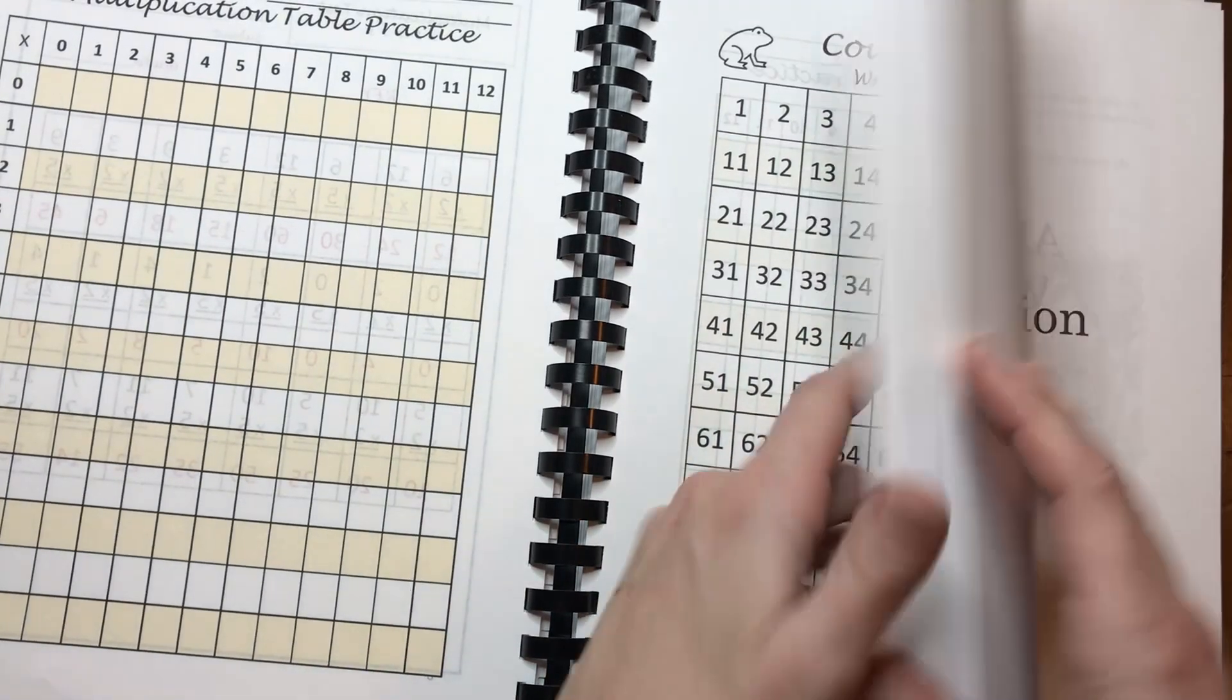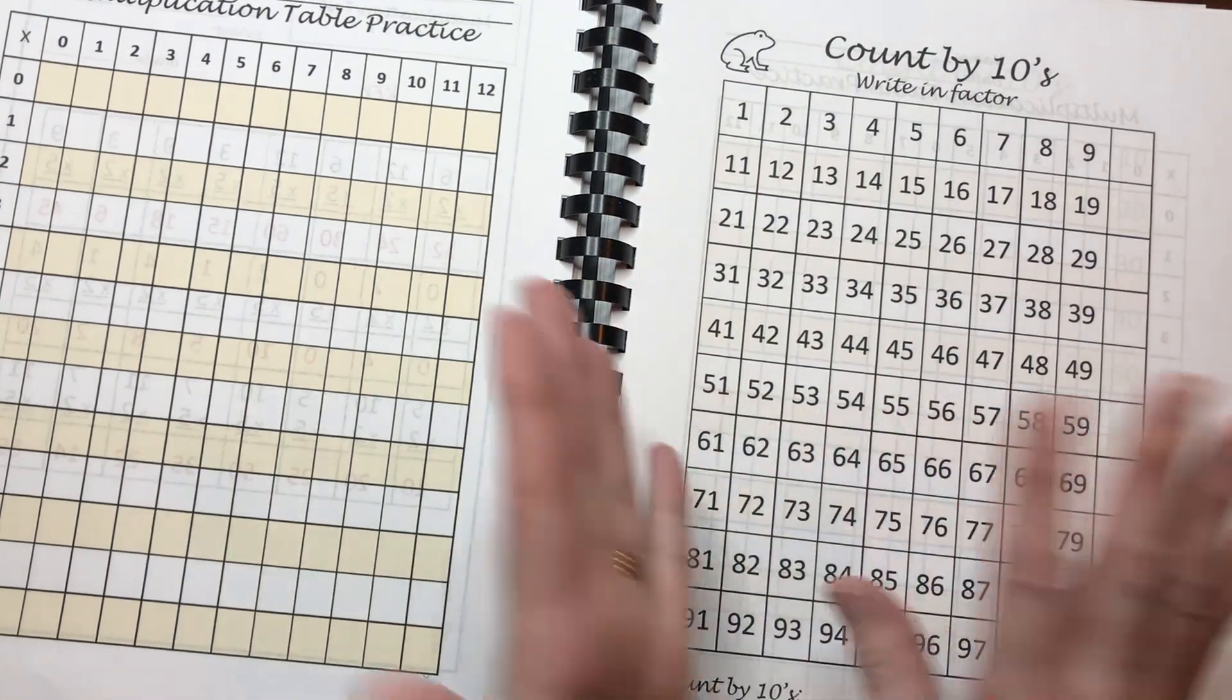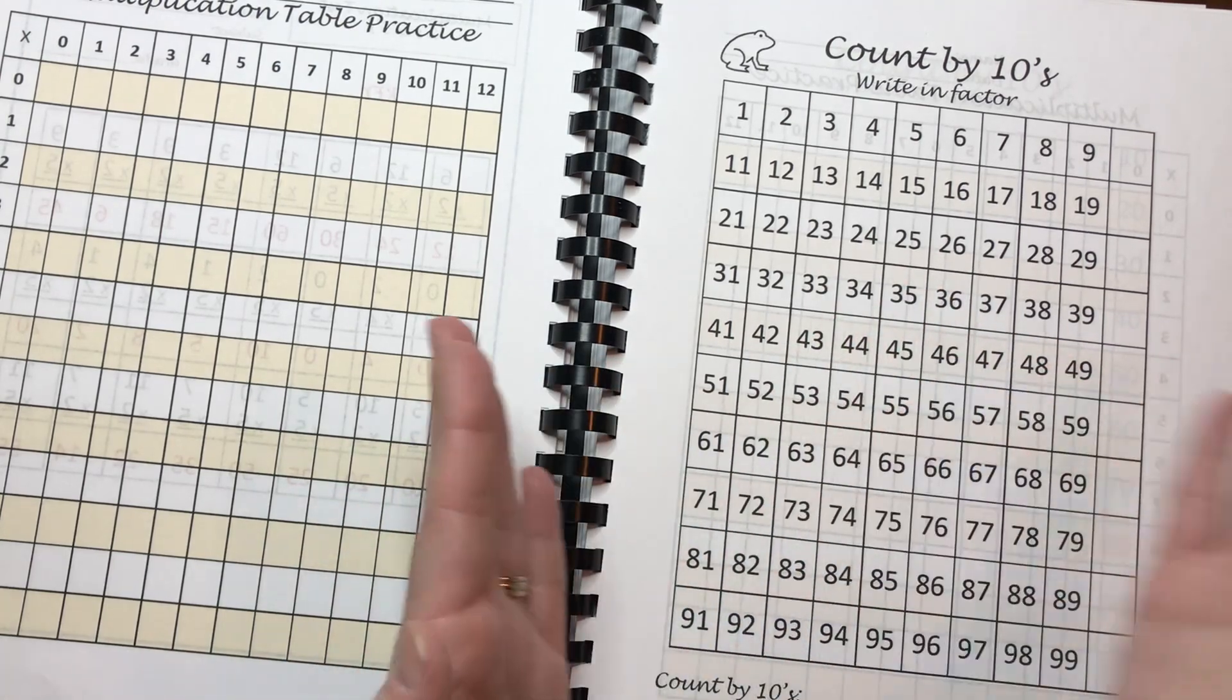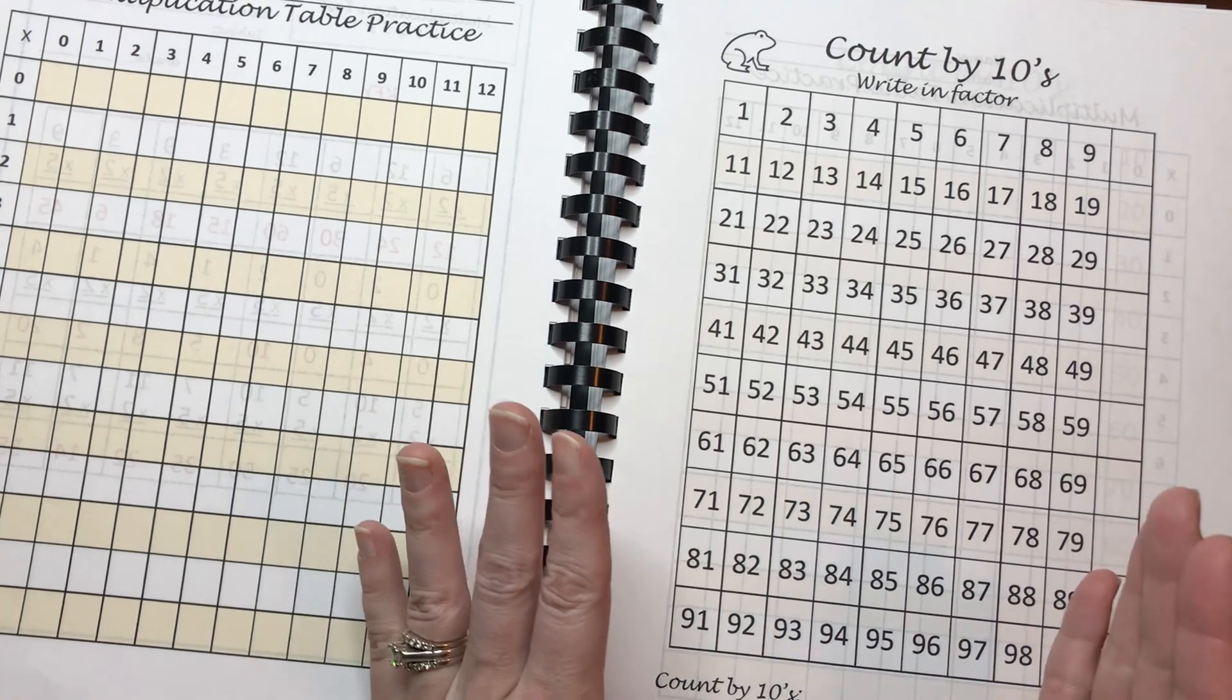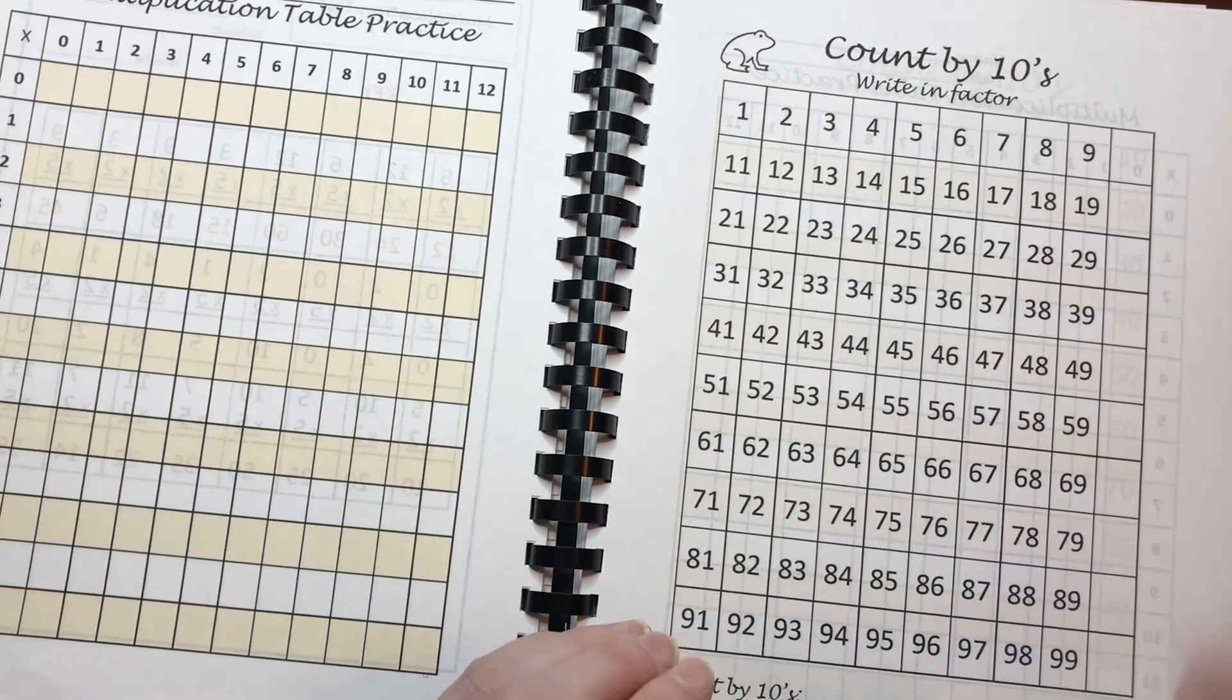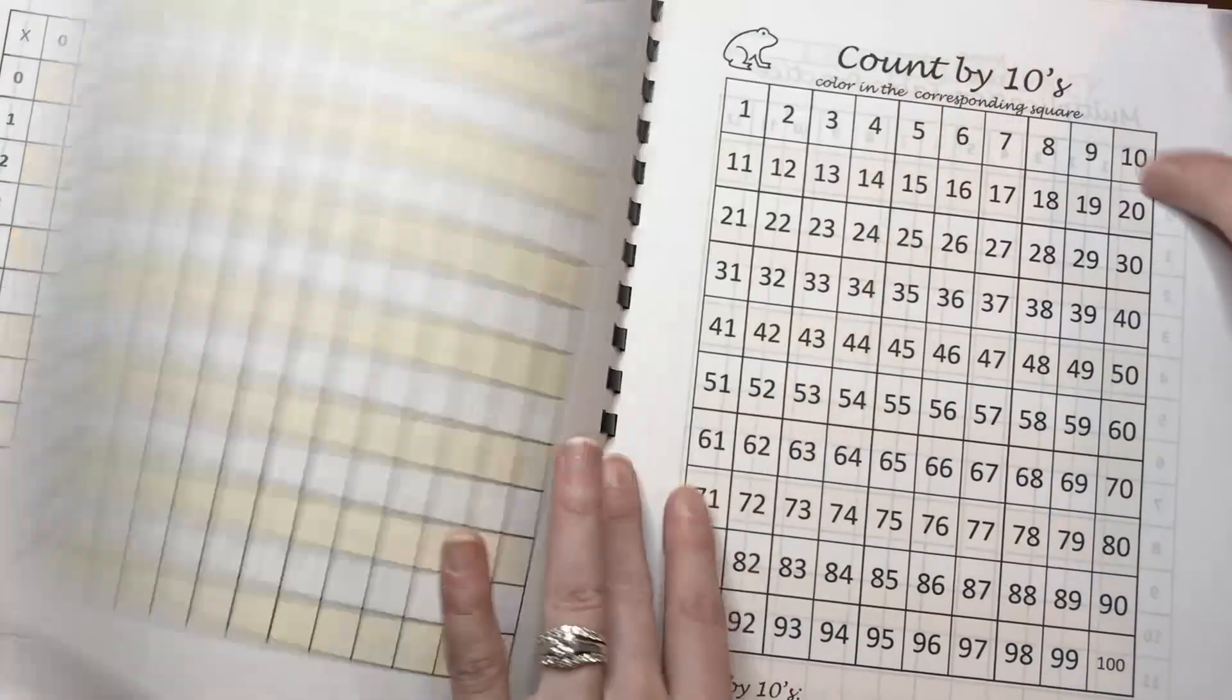I go all the way through the twelve. If they didn't pass a test, the nice thing with printable worksheets is you just reprint them and have them do that section over again, or you could have them just work on just the ones that they missed on their test. Maybe just pull out just those flashcards and just have them do them every day for a few days and then retest them.